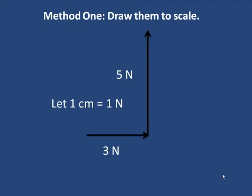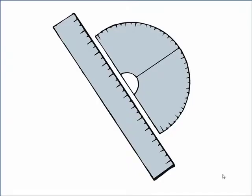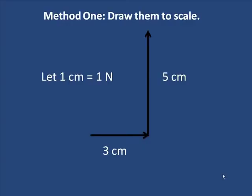Well, for 5 newtons, we'd need a line that is 5 centimeters. And for 3 newtons, we'd need one that is 3 centimeters. So we need a ruler and a protractor, and we actually draw the lines. 5 centimeters, 3 centimeters.